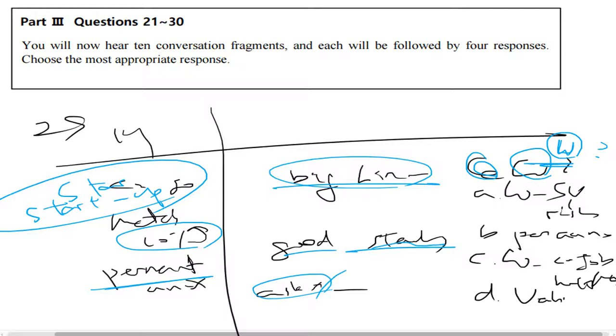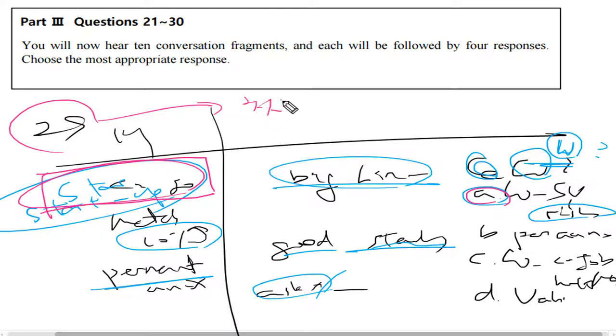A. She considers working for a startup too risky. Start-up에서 일하는 게 너무 위험부담이 크다라고 생각을 하고 있다는 거예요. 맞죠? 그럼 여기서 우리가 지금 얻을 수 있는 경우는 뭐냐? 첫 번째 문장을 놓치면 A를 답하기가 쉽지가 않았습니다. 그러니까 결론 - 29번 이제 틀린 것에 대해서는 첫 문장을 놓치지 말자 입니다.